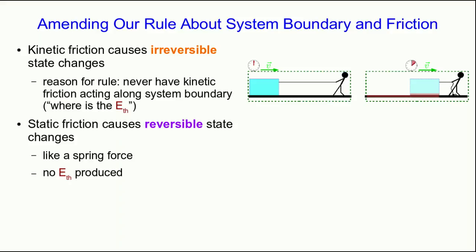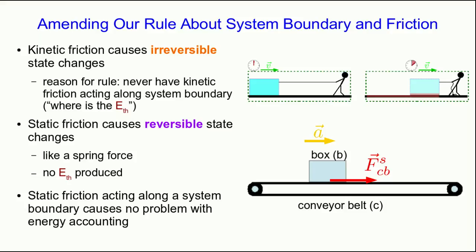However, static friction causes reversible state changes. It's really just like a spring force. There's no thermal energy produced. And so if we have static friction acting along a system boundary, this causes no problem with our energy accounting. And so, for example, in an example we're about to look at with a box on a conveyor belt, it'll cause no trouble at all if we choose just the box to be our system.